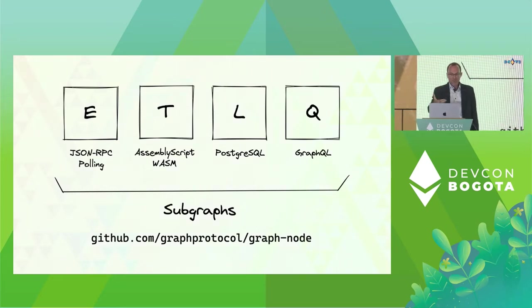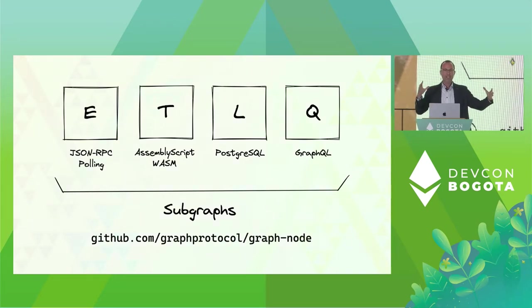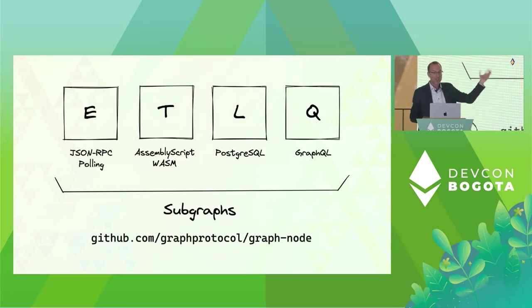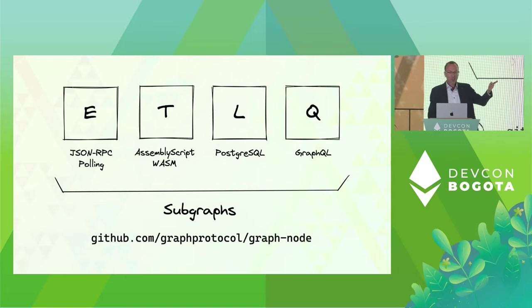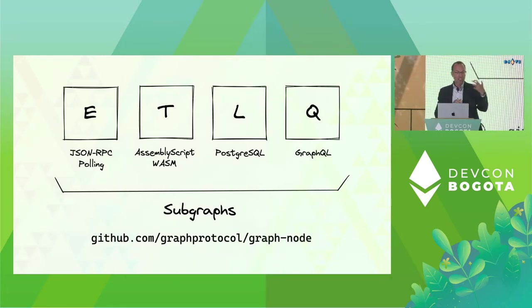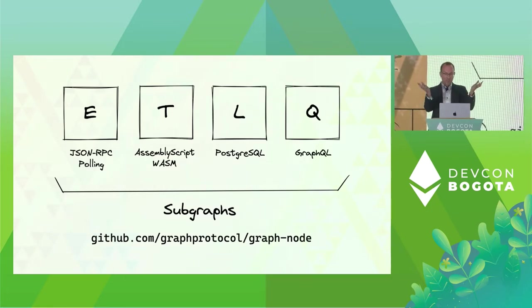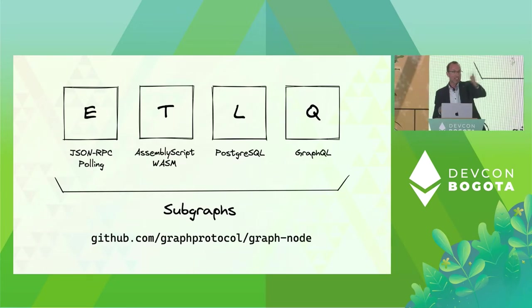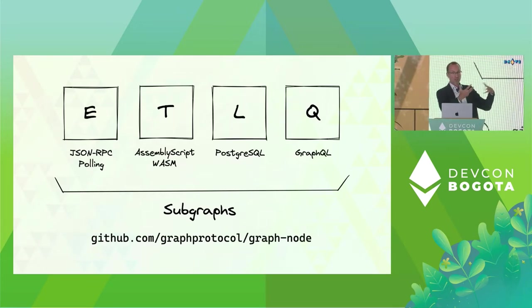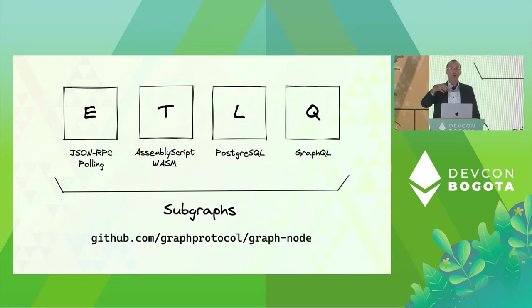Subgraphs today provide that simple, approachable, end-to-end solution to blockchain indexing. The Graph node is responsible for all of these components. The extraction is done through hitting JSON-RPC nodes. Then transformation — you provide some AssemblyScript, which compiles to WASM running in a distributed environment. And then you have the load aspect, which the Graph node does — puts that into Postgres and offers you a rich and beautiful GraphQL interface on top.